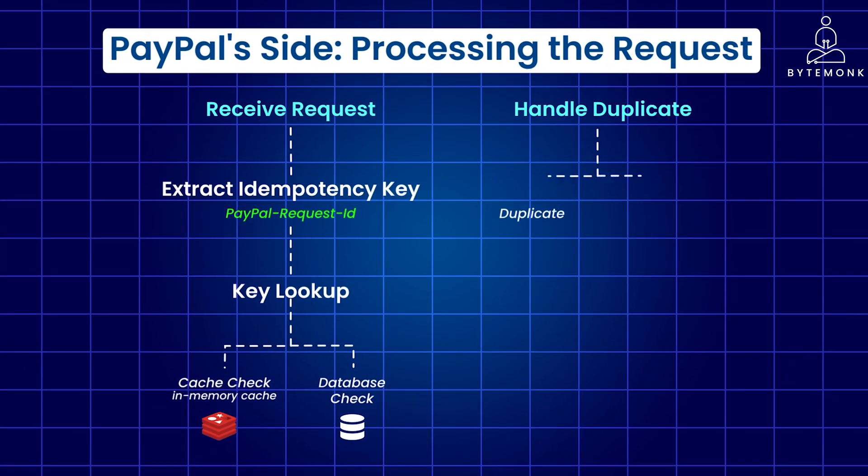If a duplicate key is found — either in the cache or database — PayPal retrieves the stored result of the previous request, such as success, failure, or pending, and returns it directly to the client. This prevents the operation from being executed again, ensuring idempotency.